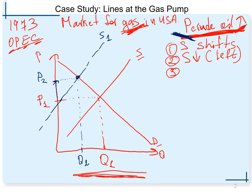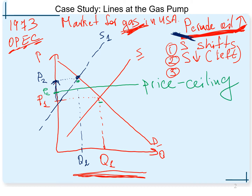But the government thought it wasn't fair for buyers to pay this higher price for each gallon of gas. What they did was impose a price ceiling — price C — that was lower than the new equilibrium. Remember, the new equilibrium is what's now on the market, and the government set the price ceiling below it.